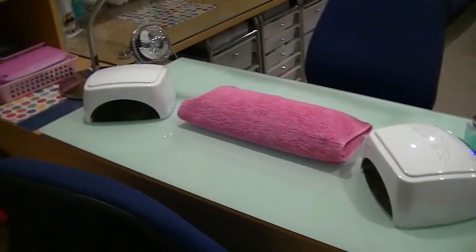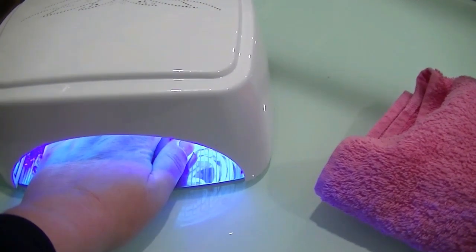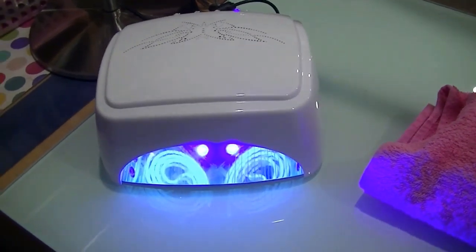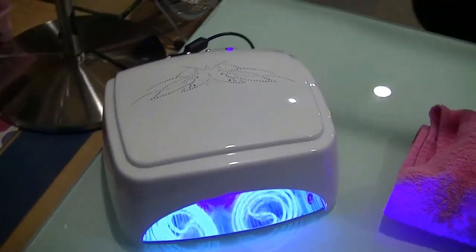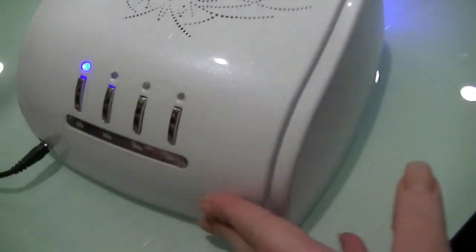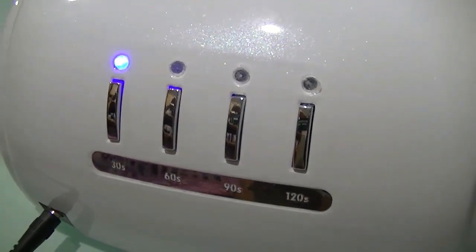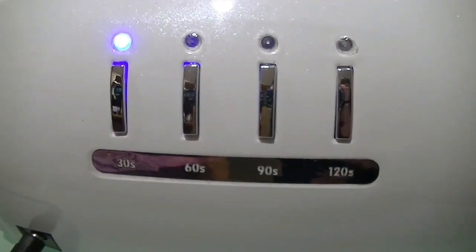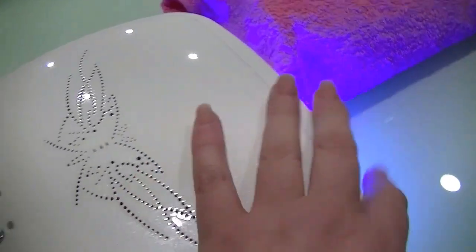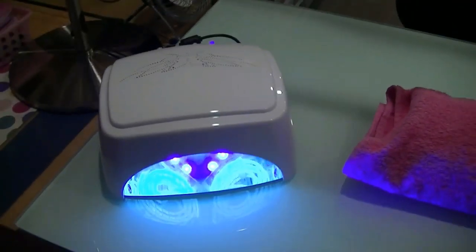These are my CCFL LED lamps. It has an auto feature so as soon as the hand is placed into the lamp, the light will activate. It has four timer settings on the back: 30, 60, 90 and 120 seconds. This lamp cures both UV and LED products with an auto shut-off feature.